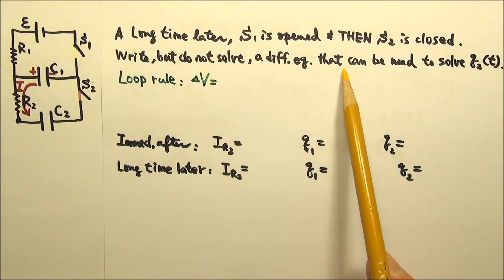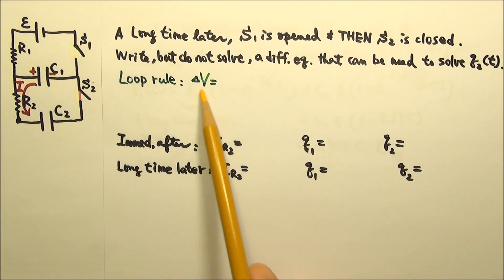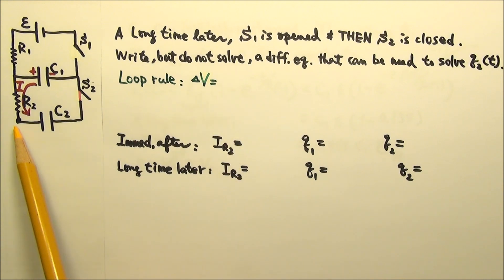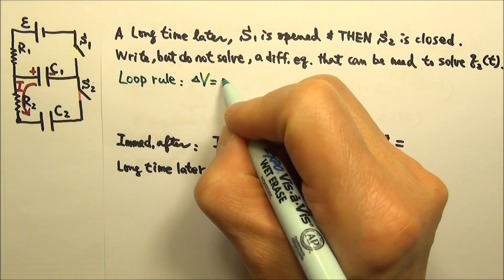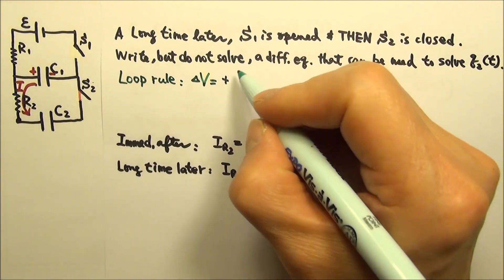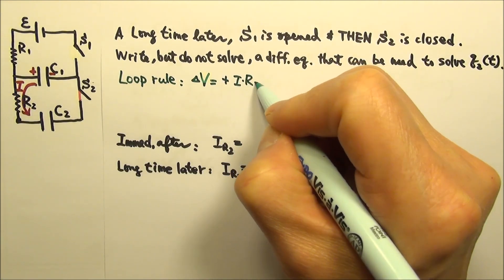To write the differential equation, we start with the loop rule. I'm going to start here and go clockwise. First, we go against the current across R2. Since we're going against the current, the potential increases by I times R2.